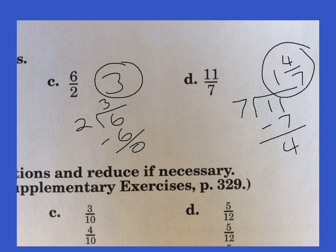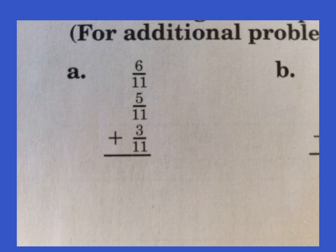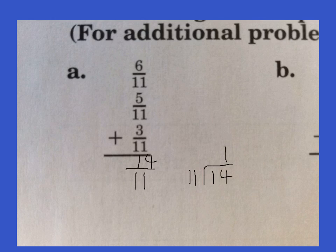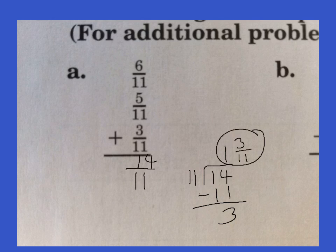Now we're going to look at number two. It tells us to add, to change the improper fractions, and to reduce if necessary — so some of these will need to be reduced. A — we know 11 will be our denominator. We add 6 plus 5, that's 11, plus three more would be 14. We get 14 over 11, which is an improper fraction, so we've got to make it proper. How many times does 11 go into 14? One time. One times 11 is 11. We subtract and we get 3. It's 1 and 3 elevenths — that can't be reduced, so that's the correct answer.